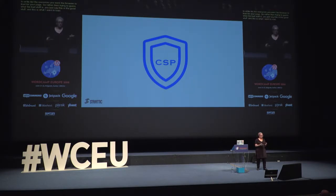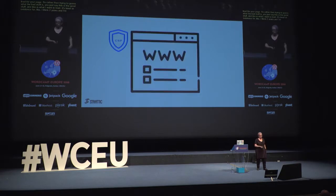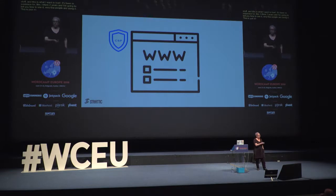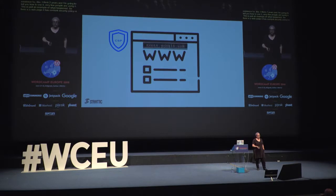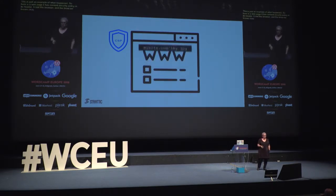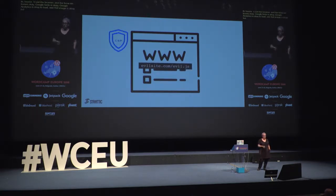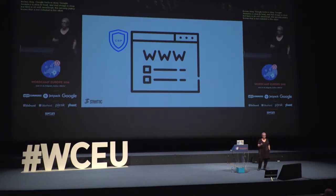Content security policies have been in existence for about two years, and very few people are using them. Here's an example of what it does: a web page has a content security policy in its header. It tells the browser: Google Fonts is okay to load, Google Analytics is okay to load, that image is okay — but here's an evil JavaScript. The content security policy knows that's not included in the whitelist and doesn't allow it to load at all. It can't even get going.